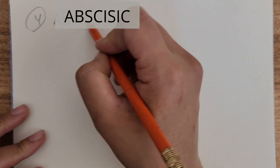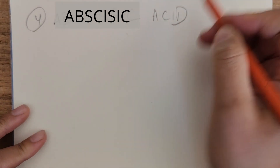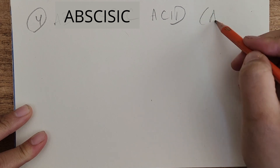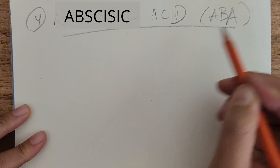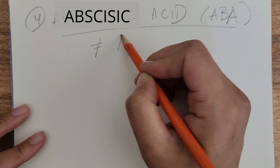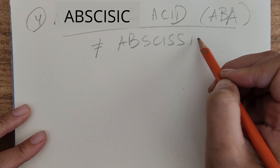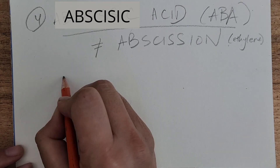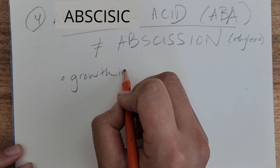The fourth class of plant growth regulators is abscisic acid, or ABA. This is tricky because abscision was just mentioned — but abscisic acid has nothing to do with abscission, at least not directly. Abscisic acid is a growth inhibitor.